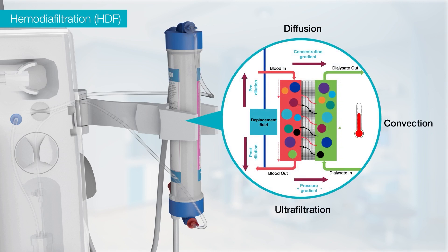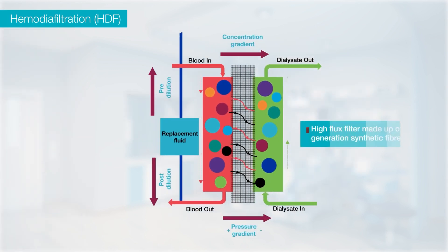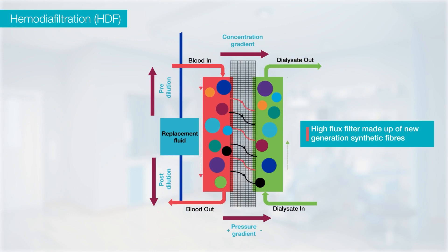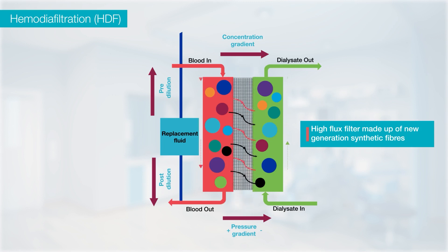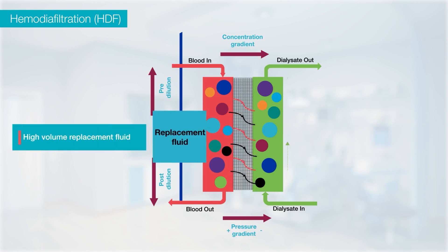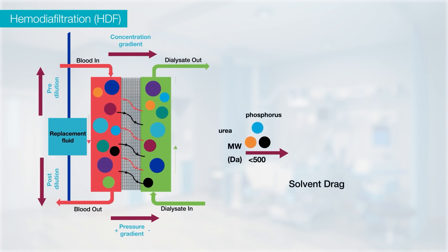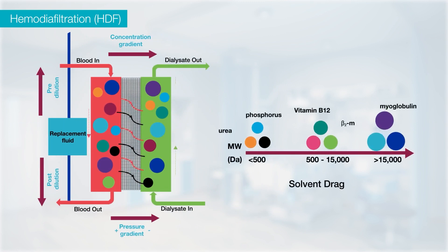During this process, the patient's blood flows through a high-flux filter comprised of new-generation synthetic fibers with a combined hydrophilic and hydrophobic structure, facilitating diffusion, convection and ultrafiltration. The convective forces are maintained through the hydrostatic pressure of high volumes of replacement fluid. HDF enhances the clearance of middle and large molecular weight uremic toxins along with small molecular weight toxins through a phenomenon of solvent drag.